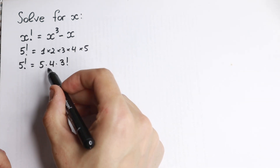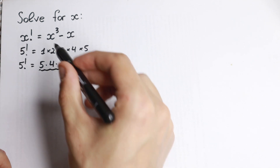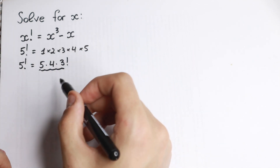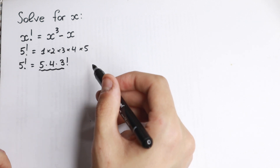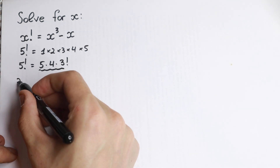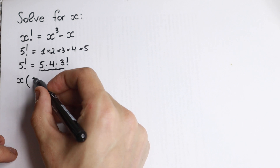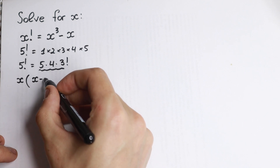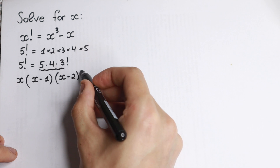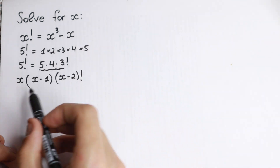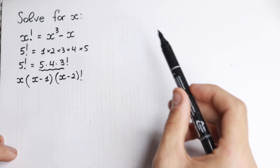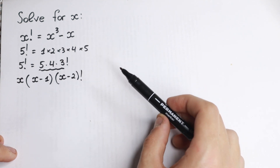Using that same idea, I write x factorial as x times (x minus 1) times (x minus 2) factorial. I hope you understand this step using the 5 factorial explanation.